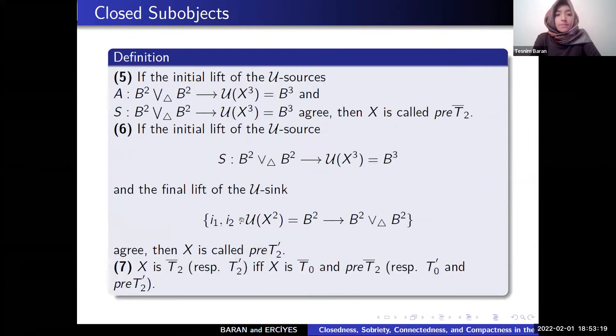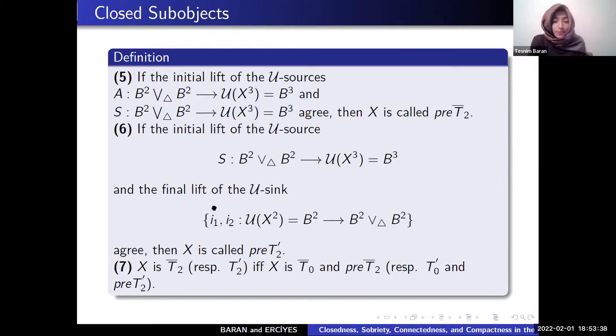If the initial lift of the U source A and C agree, then X is called prehouse bar. If the initial lift of the U sink injection maps agree, then X is called prehouse prime. X is T2 bar if and only if X is T0 bar and prehouse bar.